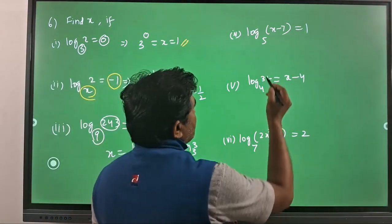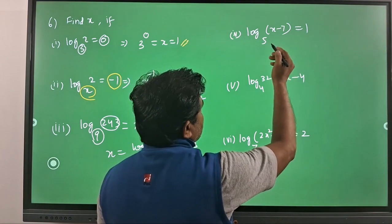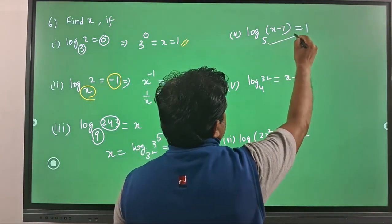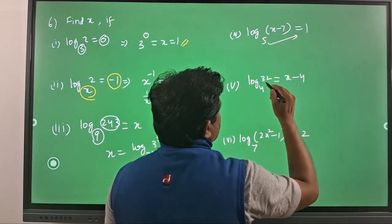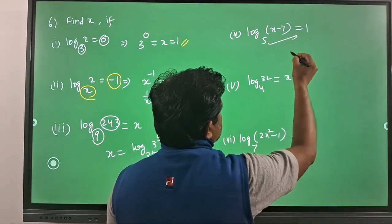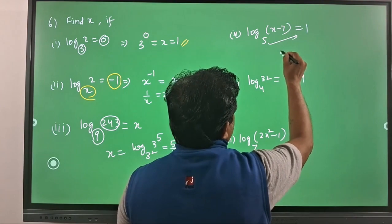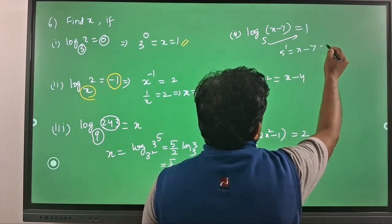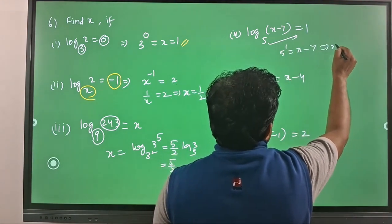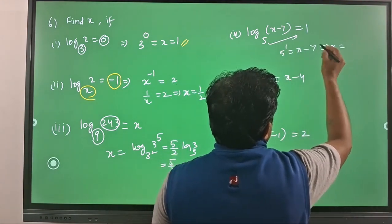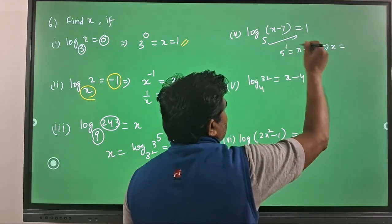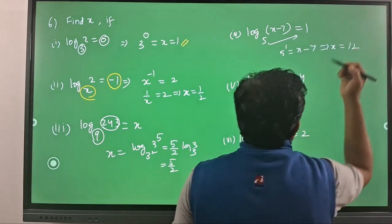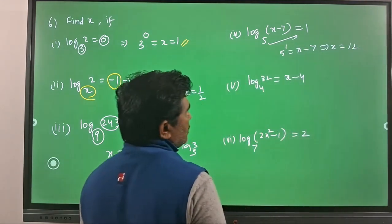Log of (x minus 7) to the base 5 is equal to 1. Just convert this logarithmic form into exponential form. You will have 5 power 1 is equal to x minus 7, which implies x is equal to 5 plus 7, so x is equal to 12.